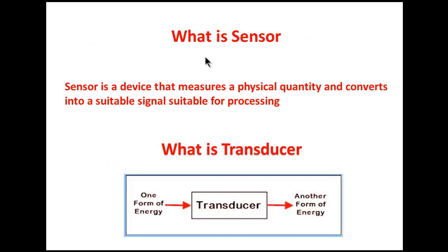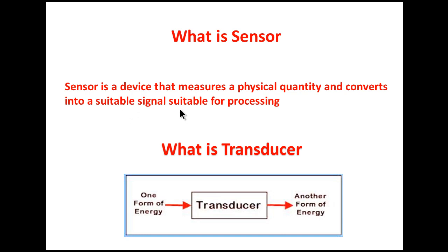Next question: what is meant by sensor? A sensor is a device that measures the physical quantity and converts it into a suitable signal for processing — converting the physical quantity into an equivalent signal that can be detected and processed.